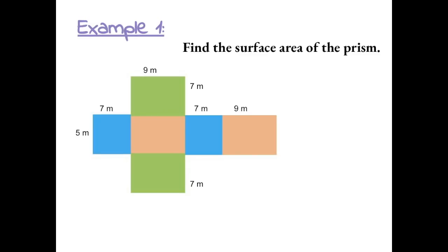Example 1: Find the surface area of the prism. This prism is given as a net because it's opened up, so we want to find the surface area by finding the area of each individual shape. Starting with the green box, it has dimensions 9 by 7, so 9 times 7 gives us 63 for that box.